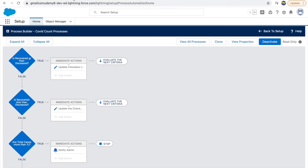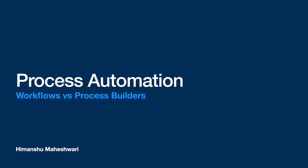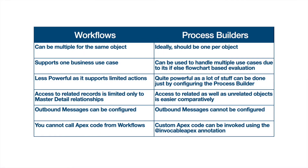So that was about process builders. We've now covered workflows and process builders — the two most important tools an admin should have to declaratively configure things. Using point-and-click you can configure a good chunk of background jobs that users need not enter manually. One last thing: let's look at the differences, as this is commonly asked in interviews. Workflows can have multiple rules for the same object because each entry criteria needs a separate workflow.